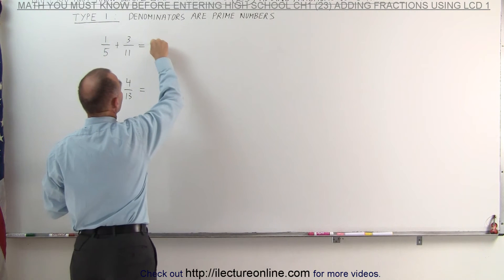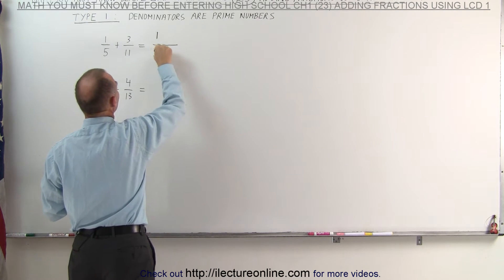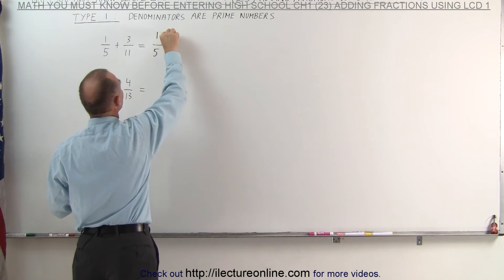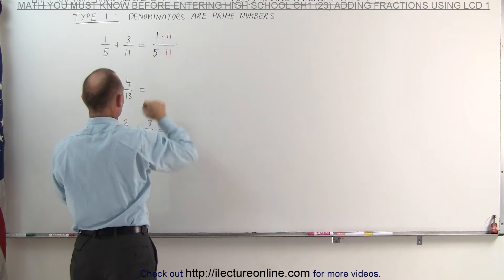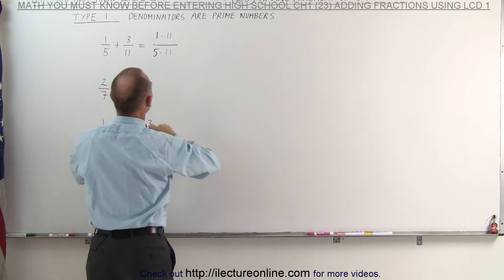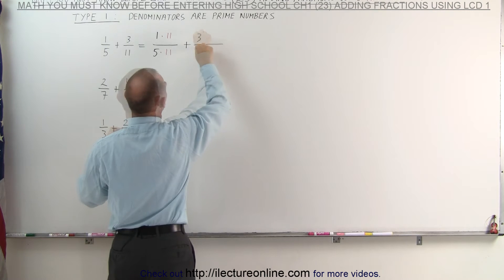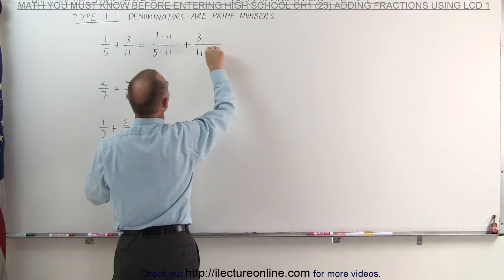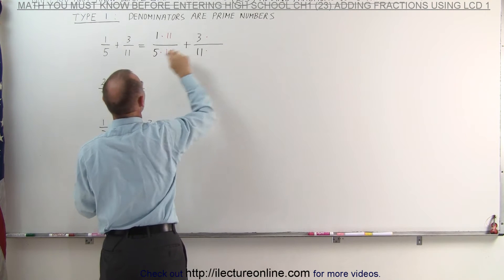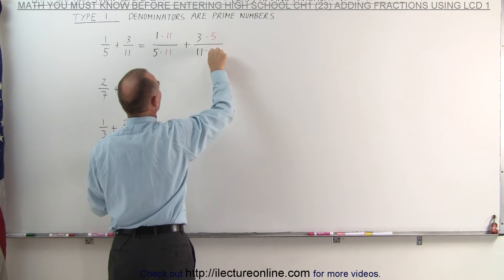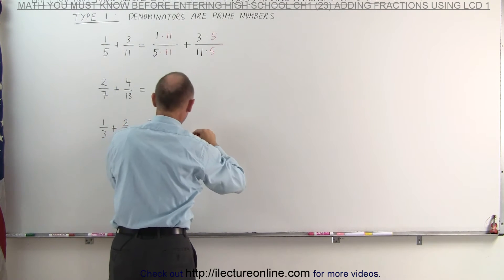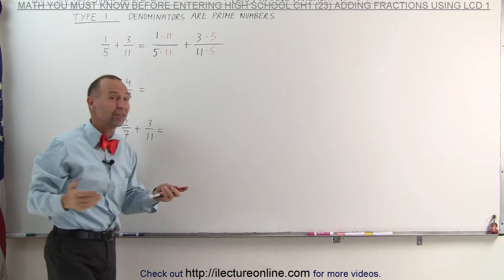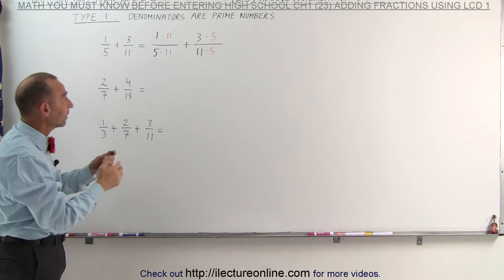And this is what that's going to look like. So we have 1 over 5. We're now going to multiply both the numerator and the denominator by the denominator of the second fraction. We add that to the second fraction, and here we must multiply both the numerator and the denominator by the denominator of the other fraction, 5 over 5. Notice, when I multiply times 11 over 11, or times 5 over 5, that's the same as multiplying times 1, and nothing really changes.